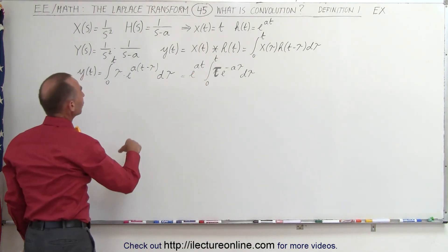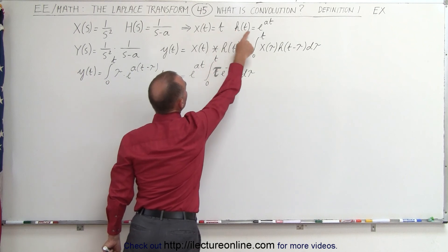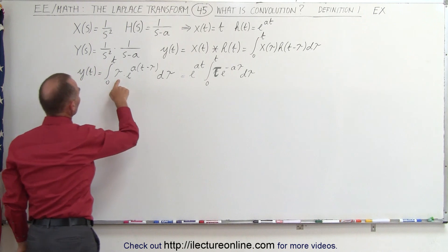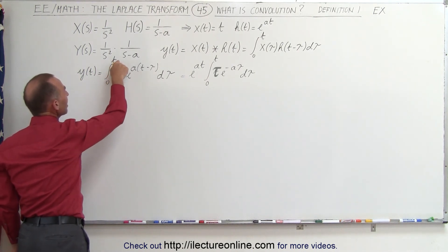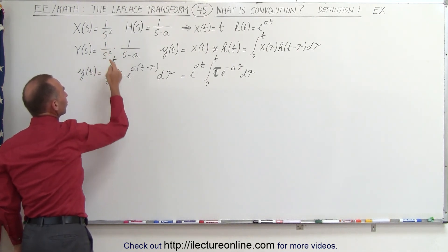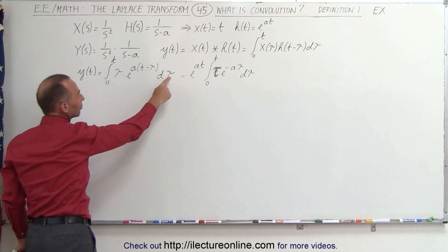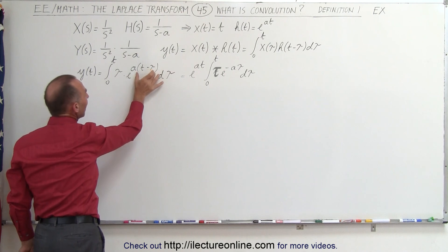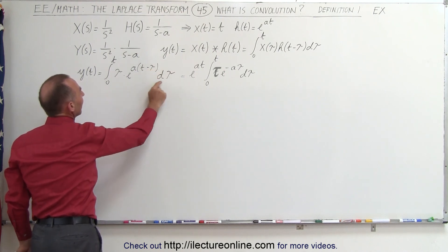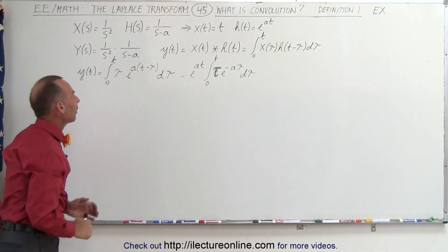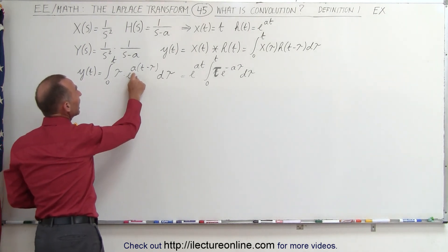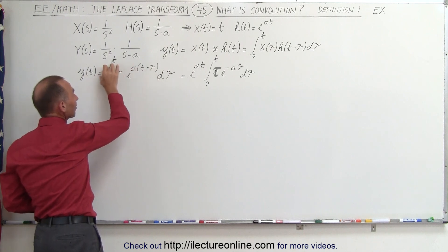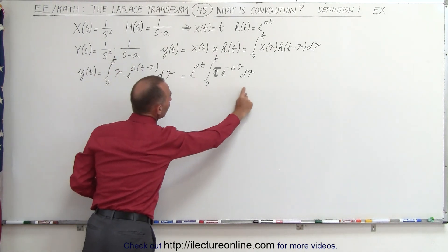So with our example, we're going to take these two functions, t and e to the at, and write them into our integral. It's the integral from 0 to t of t — using dummy variable tau — and e to the a times t minus tau, times d tau. We can then factor out an e to the at, because in this case t is not a variable, it's a constant, so it can come outside the integral sign.